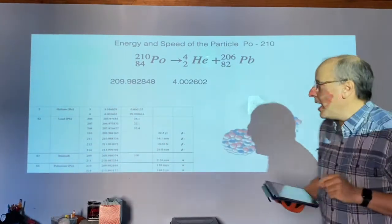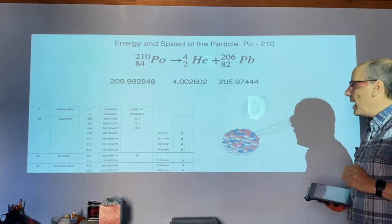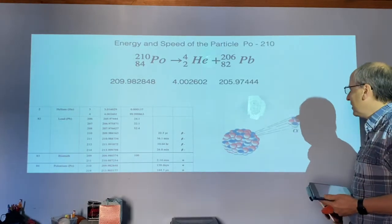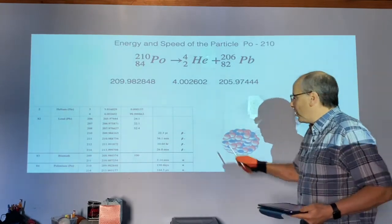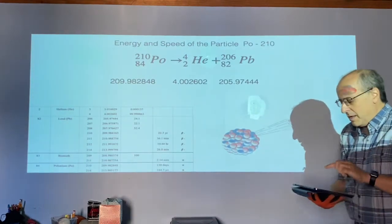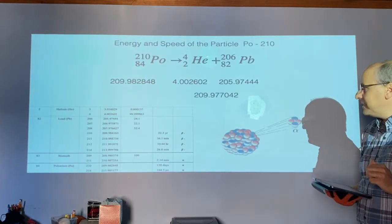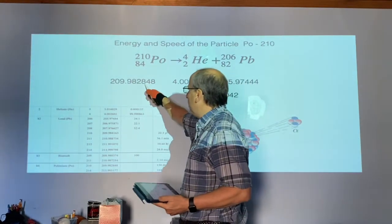Then you look up the mass of the particles you finish with. So we've got a helium nucleus and we've got a lead nucleus. So we write down those two masses. Starting mass, ending masses. You then sum up the masses at the end. And you'll notice they do not equal what you started with.